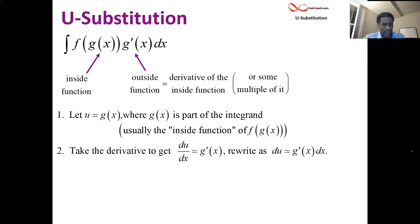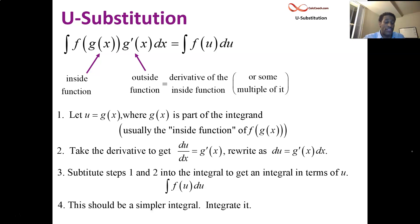You take these steps one and two, put them together in step three, sub everything in, and you end up with a new integral. Instead of being f of g of x, now it's going to be f of u. Instead of being g prime of x dx, now it's going to be du. f of u du is your new integral, and the whole point is that's supposed to be a simpler integral. It should be a simpler integral that you can integrate.